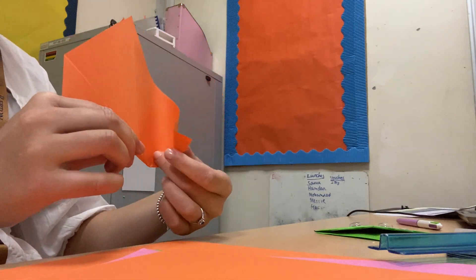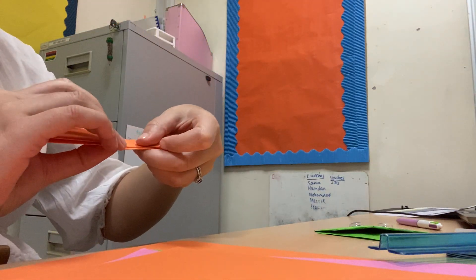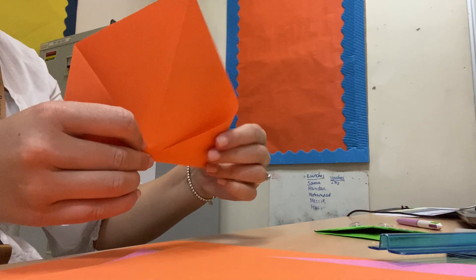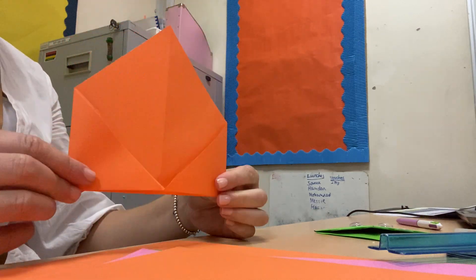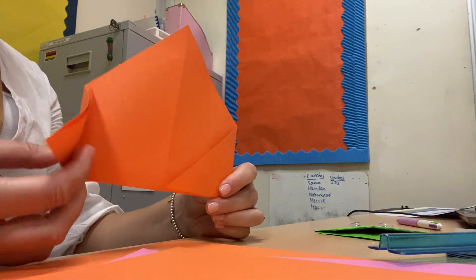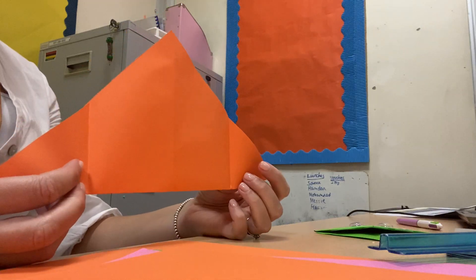And do the same with the other side. Fold it to the middle and press it down. So it then looks like this. We then open them back out because we're going to need these fold lines later.